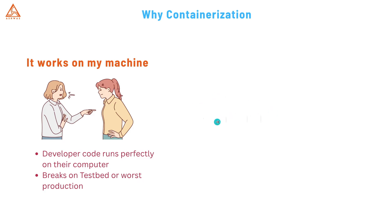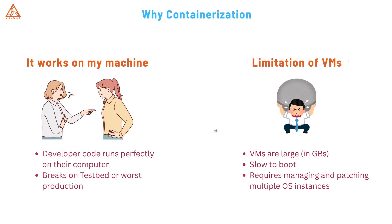And what about VMs themselves? They can be quite hefty. Each VM has a full operating system, meaning they are often large — measured in gigabytes — slow to boot, and you have to manage and patch multiple operating system instances separately, which is significant overhead, especially if you are running smaller applications. Imagine you just want to run one database service with five instances — you might end up using five virtual machines to get that isolation.